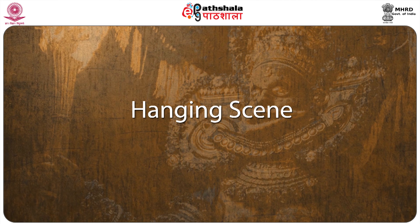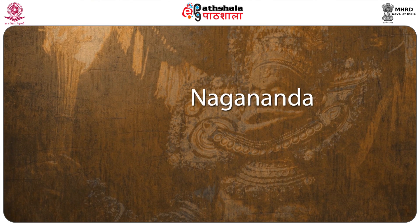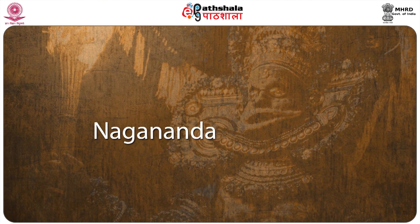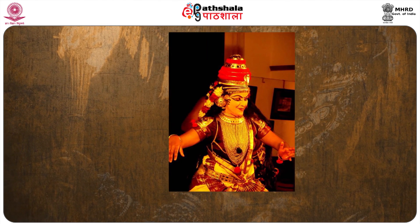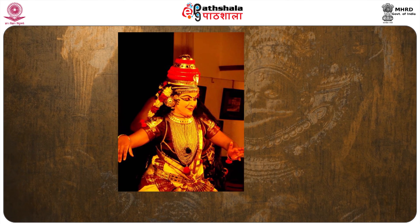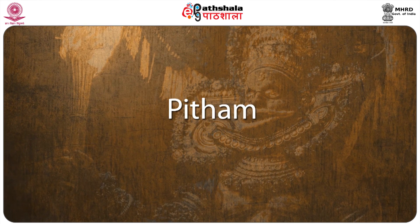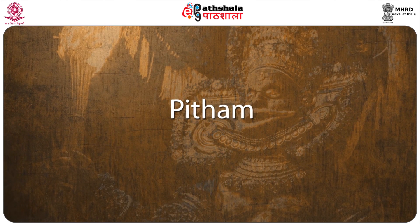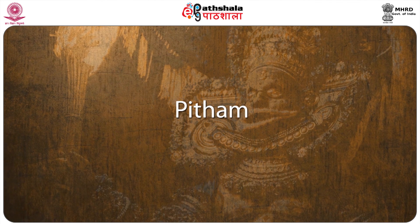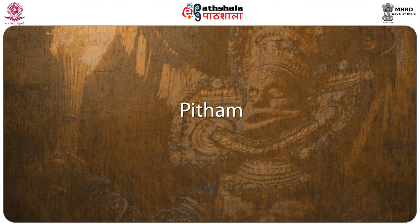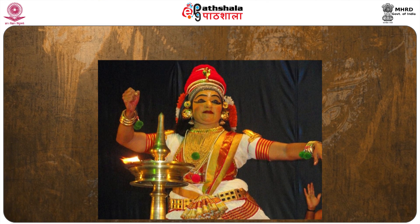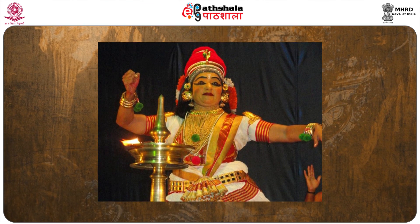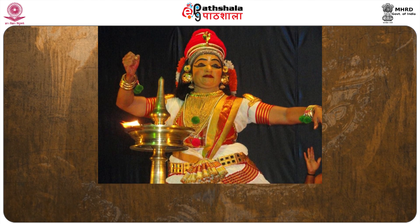Hanging scene: In the form of Nagananda, where the Naika Malayavati tries to commit suicide by hanging herself, a ring is made of cloth and hung from above. The Naika stands on Pitham and, catching the ring with her hand, jumps — keeping the neck near the string. She comes down turning round and round with the help of proper facial expression. This scene is very effective on stage.